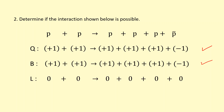Baryon number is conserved. We don't need to check lepton number or strangeness because there are no leptons and no strange particles here, so everything checks out — this interaction is possible. The two incoming protons need to be colliding with very high kinetic energy, enough to provide the rest mass energy of the new proton and anti-proton pair.